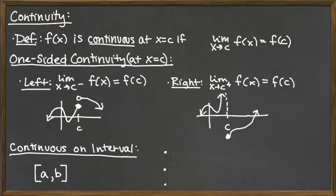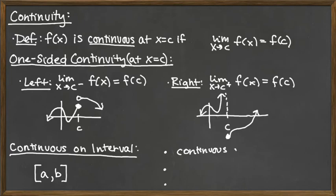We really need these one-sided continuity ideas so that we can define continuity on a complete interval. For example, on the closed interval [a, b] — including both the left and right endpoints — we say a function is continuous on that closed interval if we look at three things: the function must be continuous at every point in the open interval (the interior, excluding the endpoints), but then we need to look at the two endpoints separately.